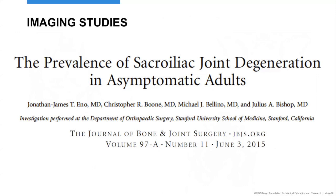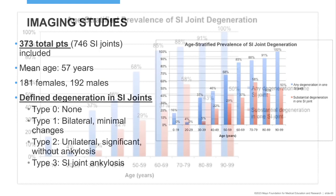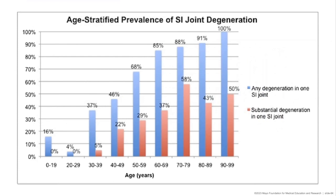It's key to know that imaging alone is not diagnostic for SI joint problems. A buddy from fellowship published this article showing that if you look at age and degeneration of the SI joint, really anybody over the age of 40 to 50 is going to have some level of degenerative changes. So imaging alone is useless for these post-traumatic SI joint issues — it's nice when it clinically correlates, but otherwise it doesn't mean much.